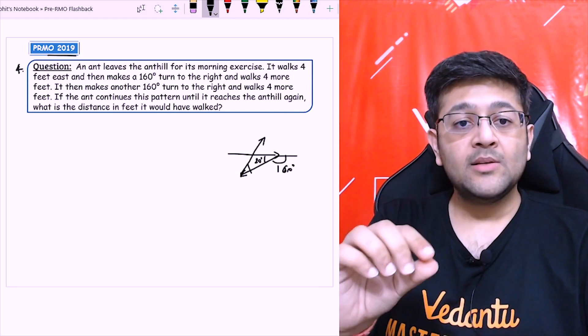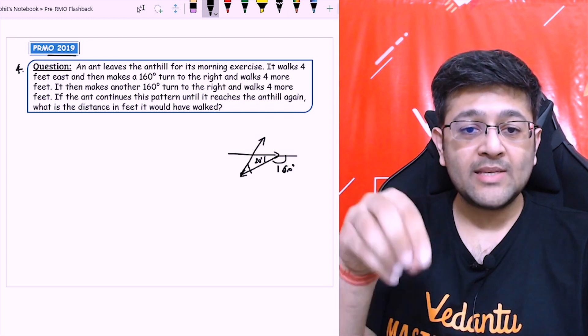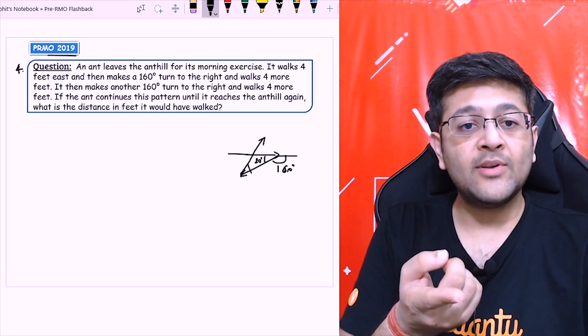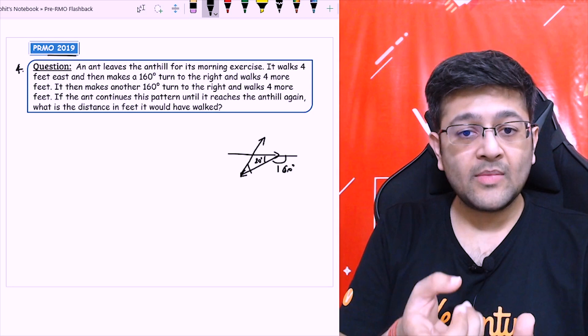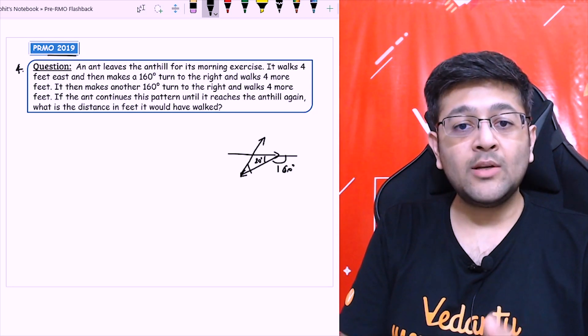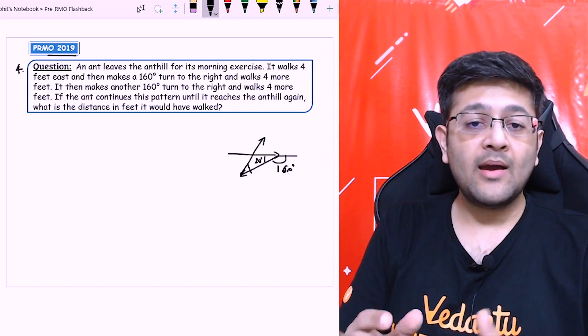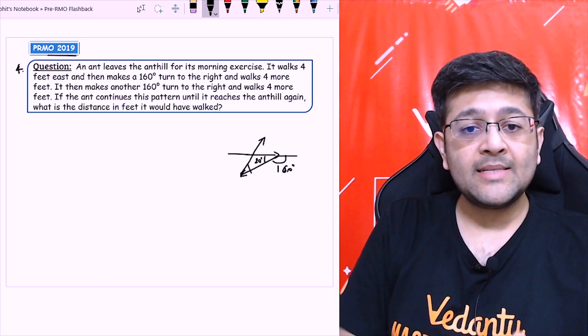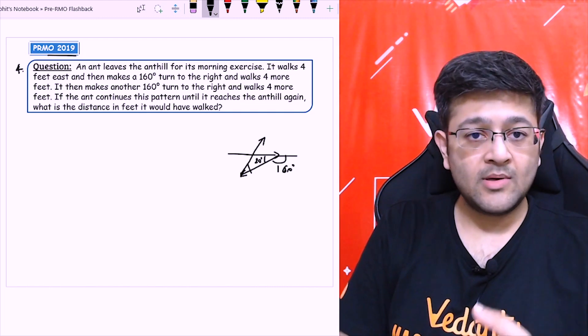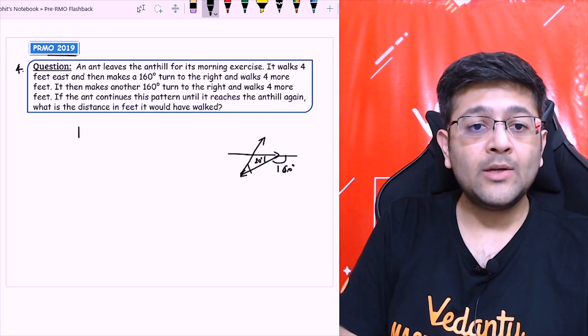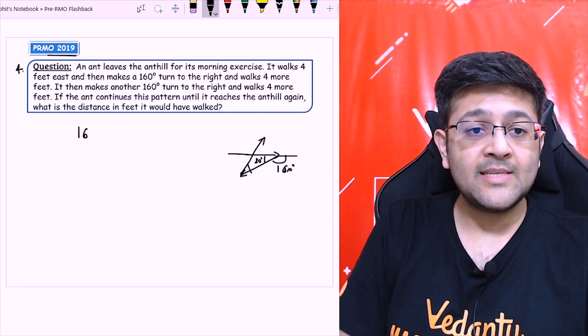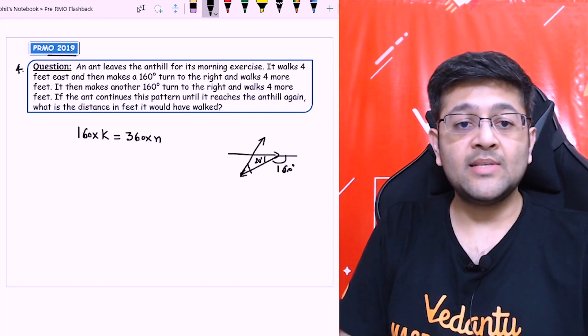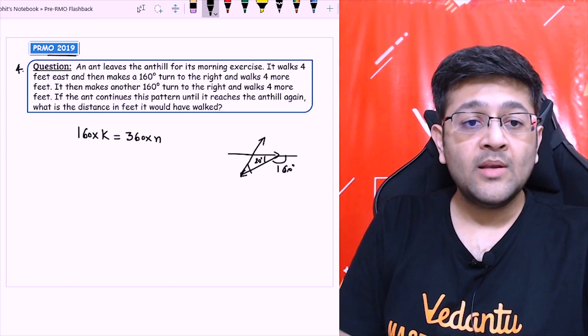I will explain again. 160 degree it is turning each time and because to reach at the same point, it should be a multiple of 360. In a circle, you reach at the same point after covering an angle of 360. So if I am each time rotating by 160 degree and I want to reach the foot of the anthill again, it should be after covering some multiple of 360 degrees. Let's say the ant makes k turns. It will be how many total angle would it have covered? 160 into k, and I want it to be multiple of 360. Let's say it should be 360n where k and n should be integers.